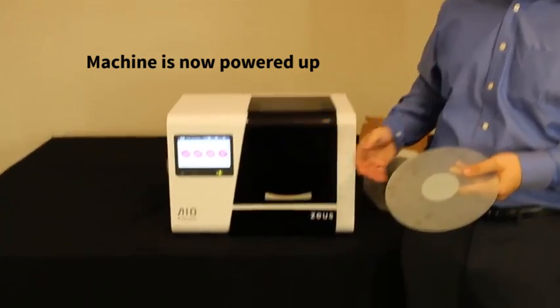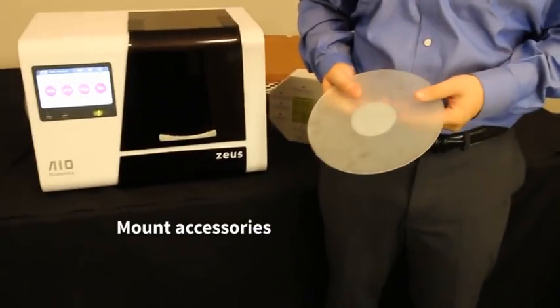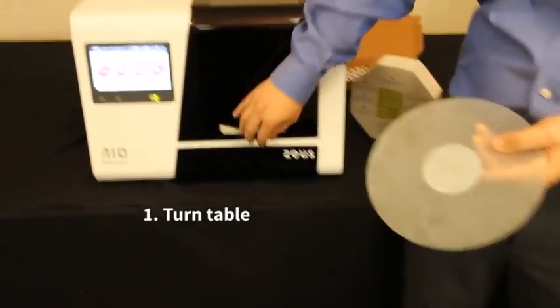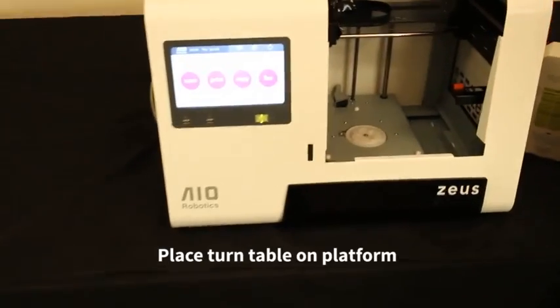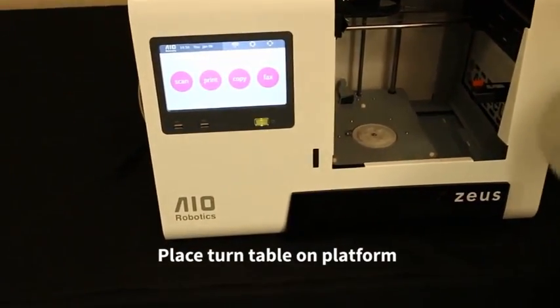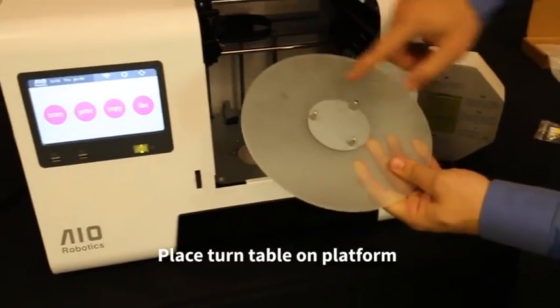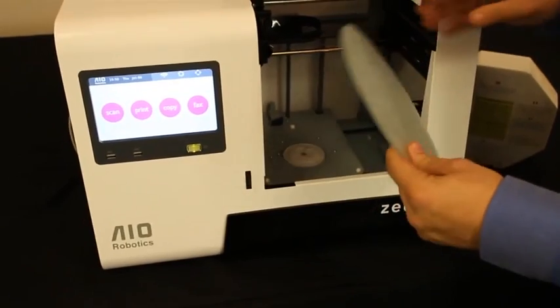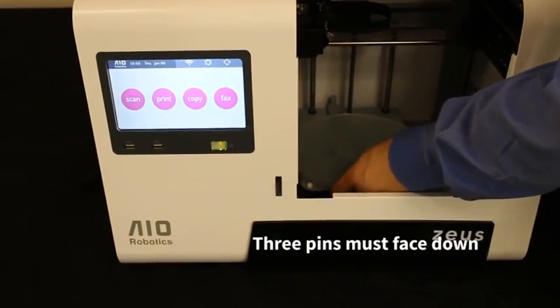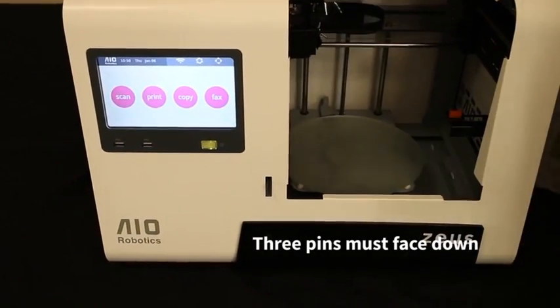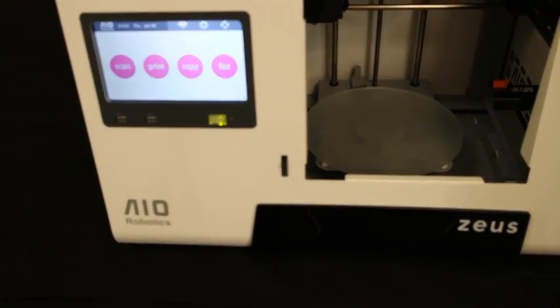The machine is fully powered up now. And let's mount the other accessory parts. Let's start with the turntable. The turntable needs to be placed on the platform. The turntable, for that reason, has three pins and they need to face the center of the platform. You just put the turntable on this platform and it will automatically snap.